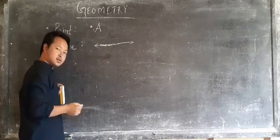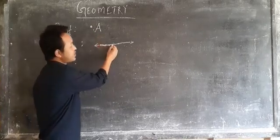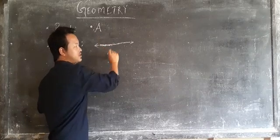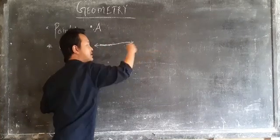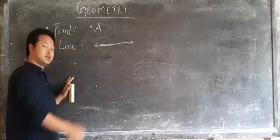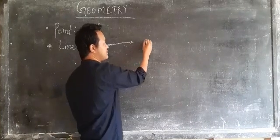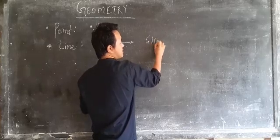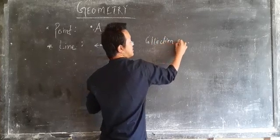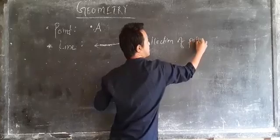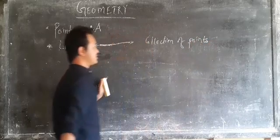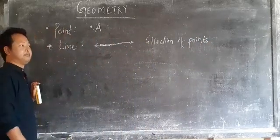These are actually the collection of points. When this collection of points are extended indefinitely on the right side and also on the left side, this forms a line. Collection of points.